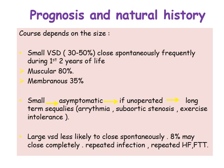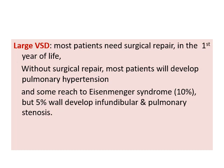Prognosis and natural history of VSD depend on size. Small VSD closes spontaneously in 30 to 50% during the first two years — most commonly muscular type (80%), less commonly membranous (35%). Small VSD is usually asymptomatic; long-term sequelae without surgery include arrhythmia, subaortic stenosis, and exercise intolerance. Large VSD is less likely to close spontaneously — only 8% close completely. It leads to repeated chest infections due to pulmonary congestion, heart failure, and failure to thrive. Most patients with large VSD need surgical repair in the first year of life; without surgery, pulmonary hypertension develops.